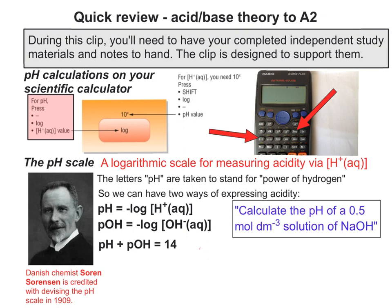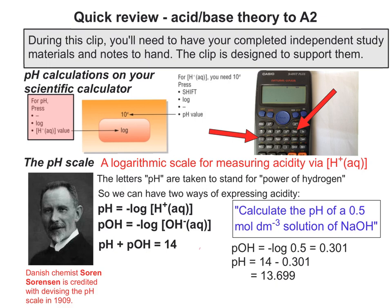Calculate the pH of a 0.5 × 10⁻³ mol dm⁻³ solution of NaOH. We have no direct information about [H+], but since sodium hydroxide is a strong alkali it completely dissociates, so [OH-] = [NaOH]. Work out the pOH first, then subtract from 14. This gives 13.699, which is what you'd expect from a strong alkali.